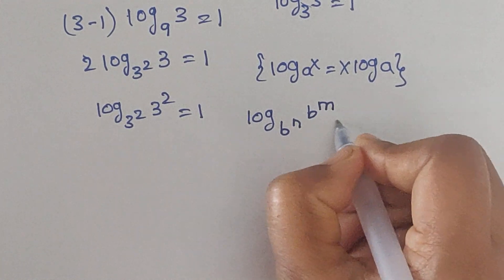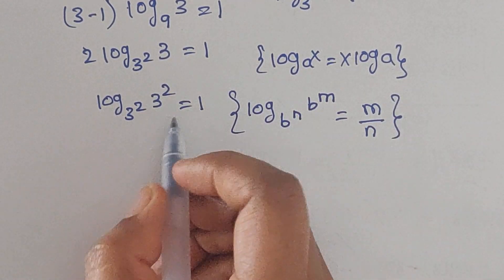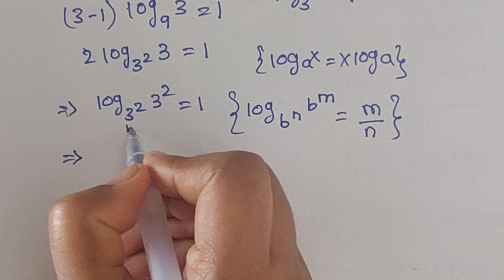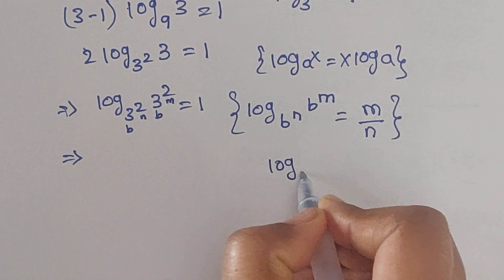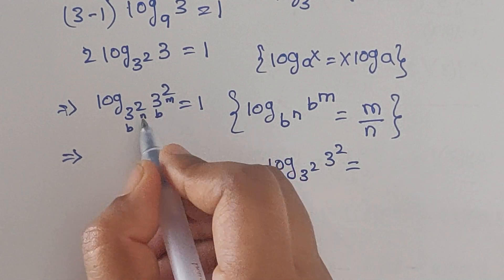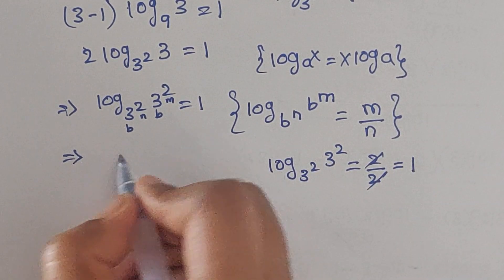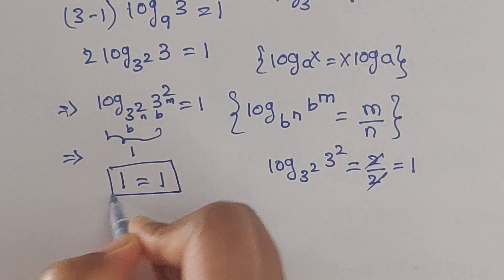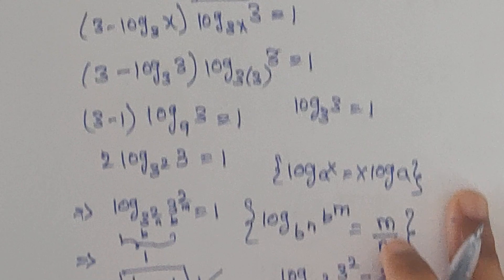Now we use the formula: log base b^n of b^m equals m over n. Here log base 3² of 3 — writing 3 as 3¹ — gives m over n equals 1 over 2. So 2 times 1 over 2 equals 1. This equals 1, so 1 equals 1, which is true. So x equals 3 is the correct answer. Thank you for watching.